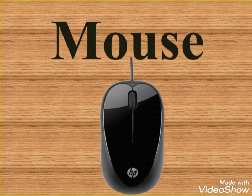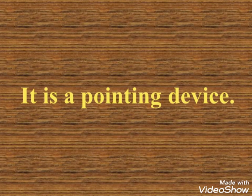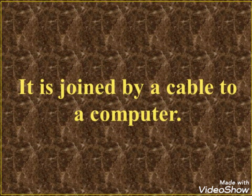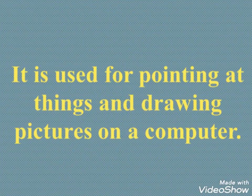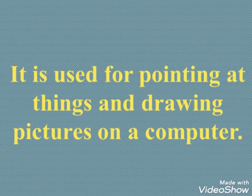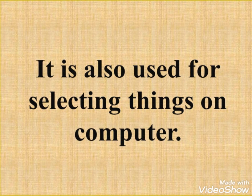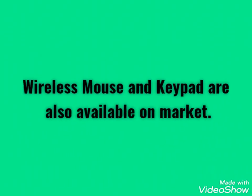The mouse is a pointing device. It is connected by a cable to the computer. It is used for pointing at things and drawing pictures on a computer. It is also used for selecting things on the computer. Wireless mouse and wireless keypad are also available in the market.